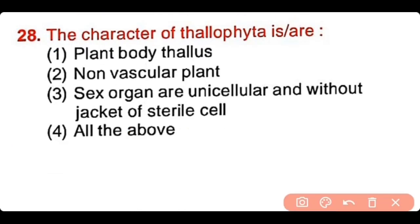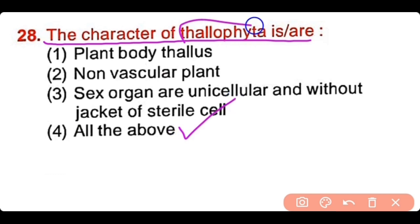Question number 28: The characters of thallophyta are: plant body is thallus, nonvascular plant, sex organs are unicellular and without jacket of sterile cells, or all of the above? The correct answer is option 4. Thallophytes have a plant body as thallus not differentiated into roots, stem, and leaves; they are nonvascular plants; and their sex organs are unicellular and without a jacket of sterile cells.